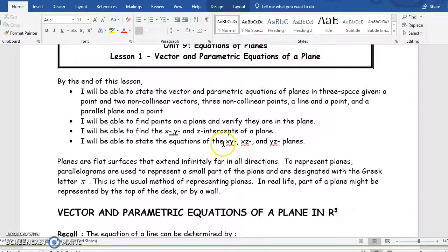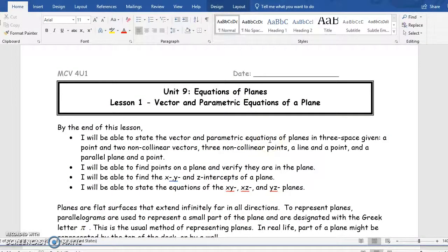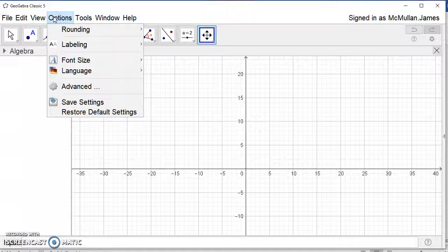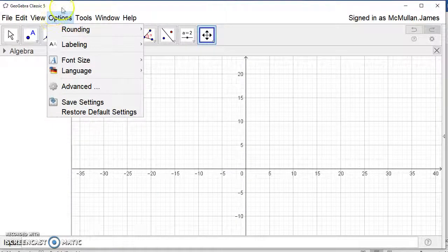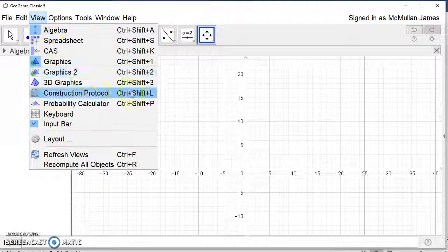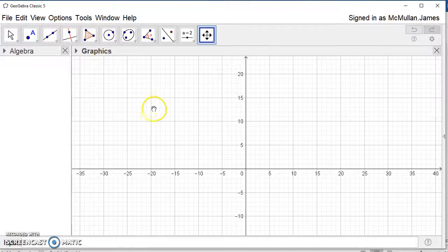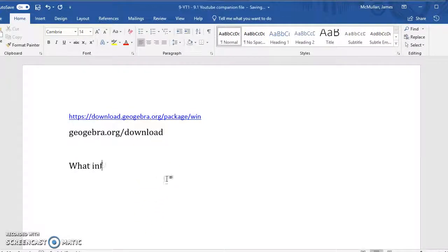The first part of this unit is simply about trying to understand what creates a plane. What information would you need in order to specify a plane? We know that a plane is a two-dimensional surface that exists in a three-dimensional space. It's a very good analogy as a piece of paper.